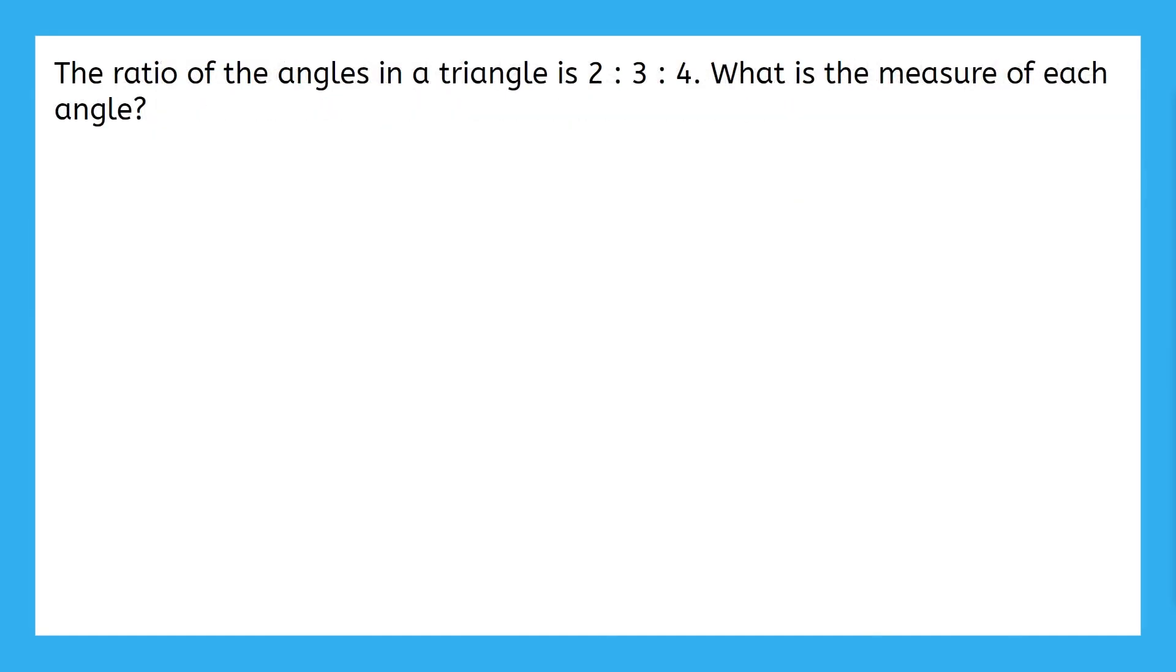Here's one more example problem. This says the ratio of the angles in a triangle is 2 to 3 to 4. What's the measure of each angle? Do you have some ideas on how to solve this? This doesn't tell us the perimeter like the last problem did, but this does tell us that we're working with the angles in a triangle. What do the interior angles of a triangle add up to? Ah, 180 degrees. I bet we're going to be creating an equation with 180 in it.